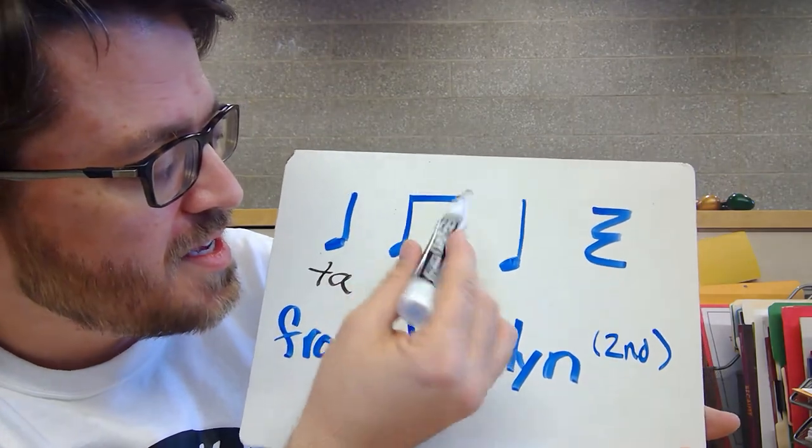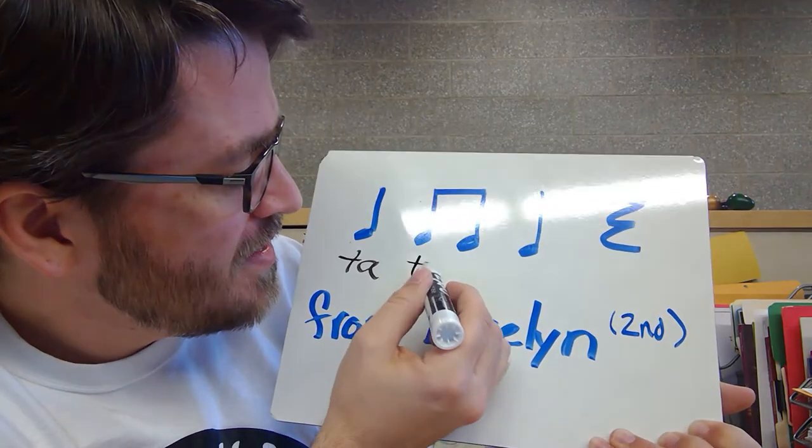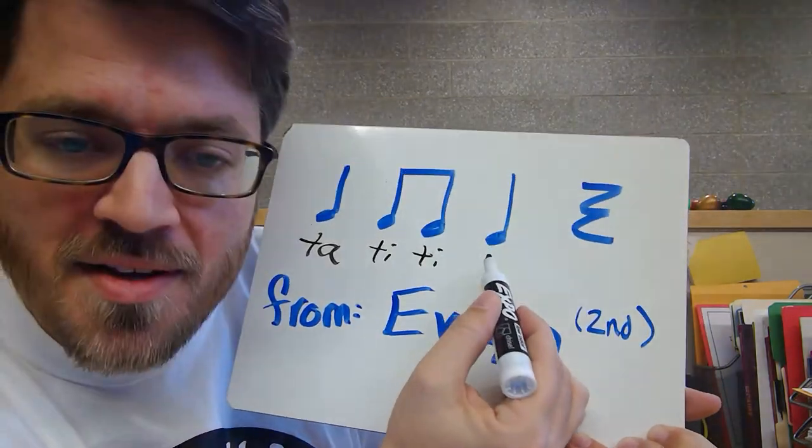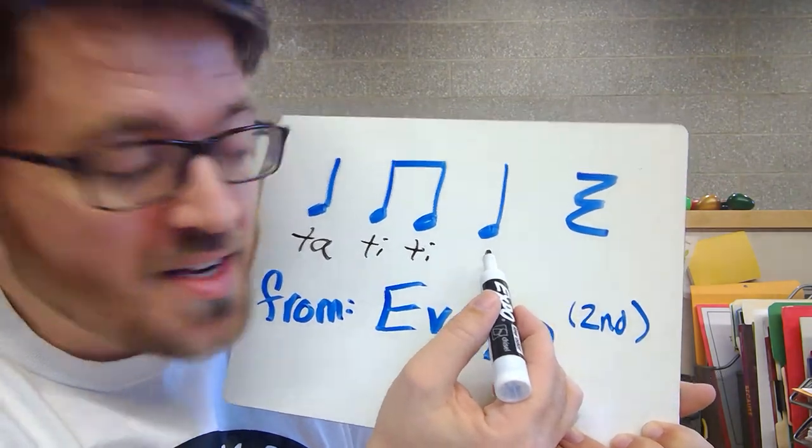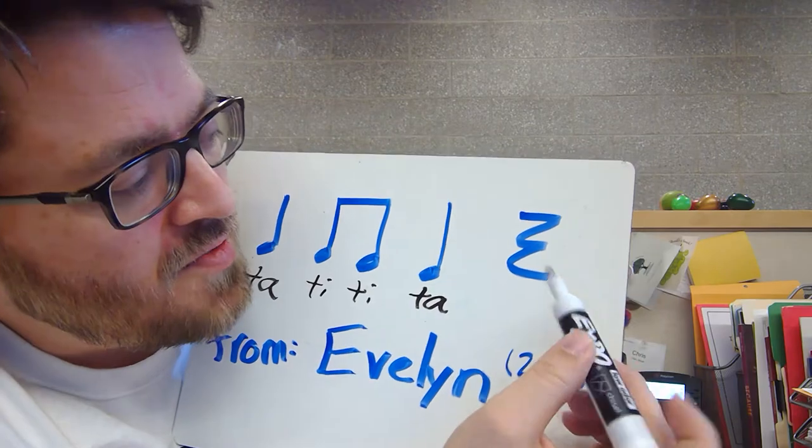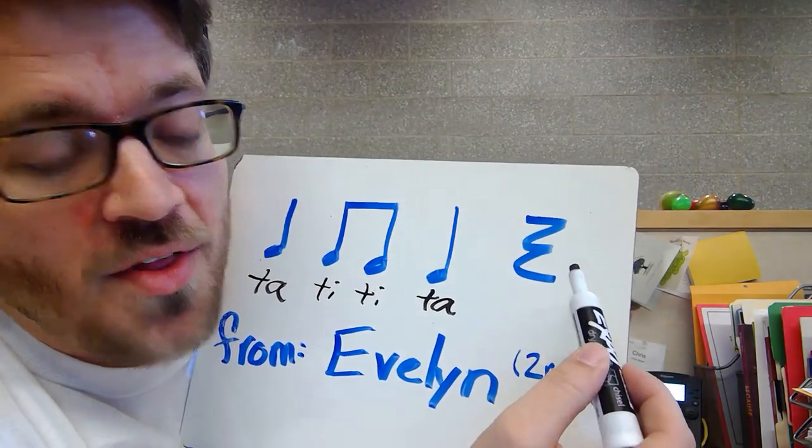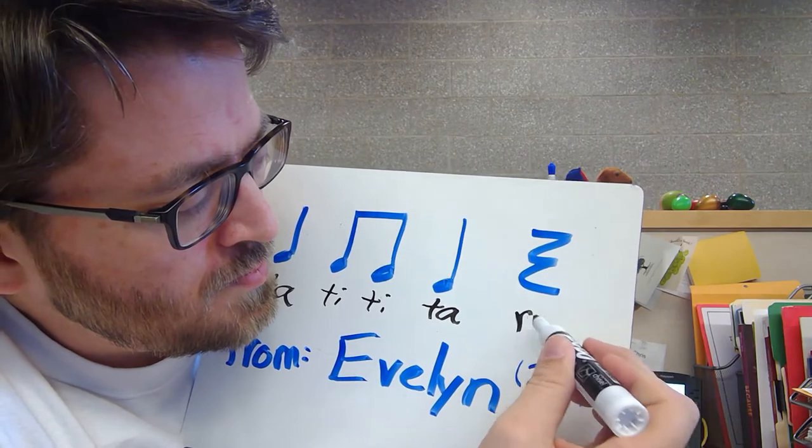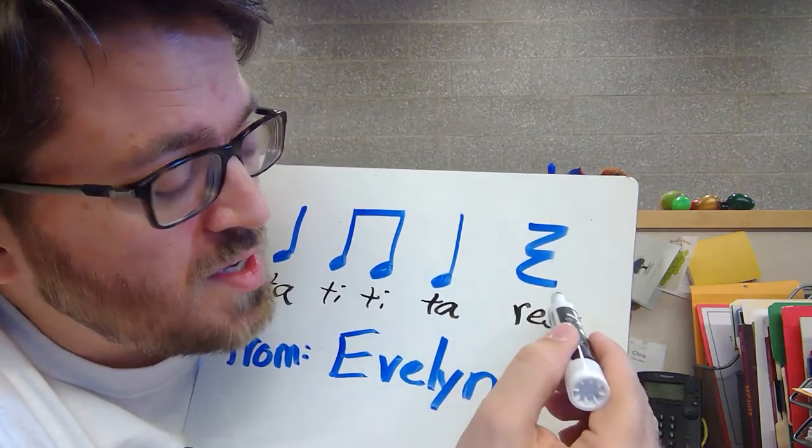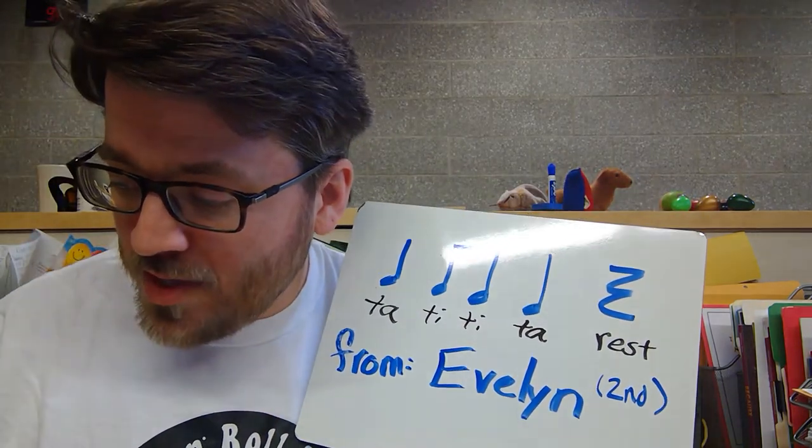For this one I'm going to write ta. For this one, here we have two sounds, two note heads connected together by a beam. So now I'm going to write ti-ti and then here another one of these. So this is going to be ta. And finally over here the good old z with a c, we call that rest.